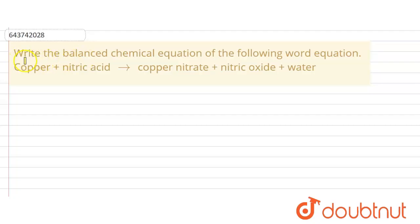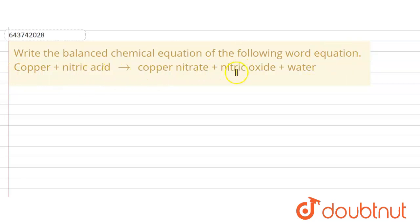In this question, we are asked about the balanced chemical equation for the following word equation: copper plus nitric acid gives copper nitrate plus nitric oxide plus water.